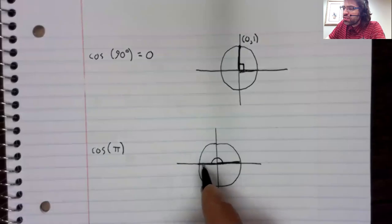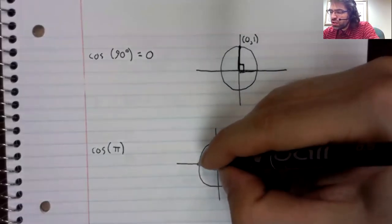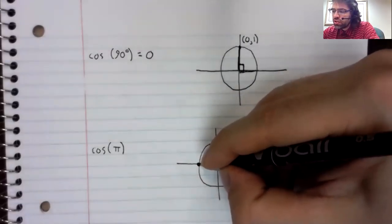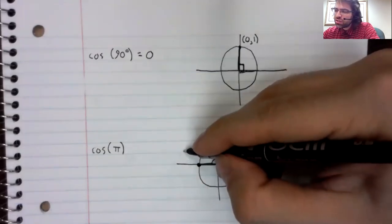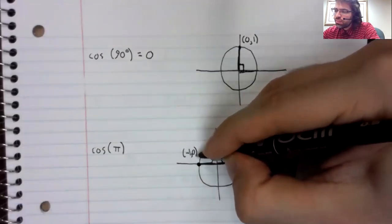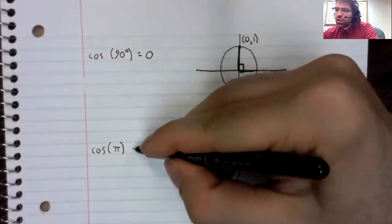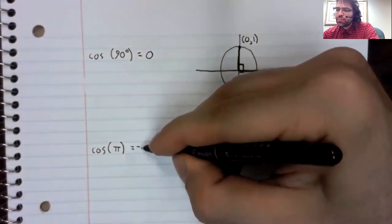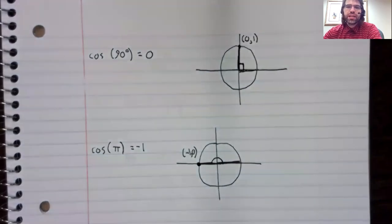And pi radians corresponds to 180 degrees. This is the first ray. This is the second.